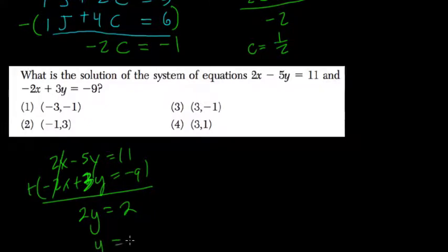Divide both sides by 2. And Y equals 1. So out of these choices, you would normally plug Y back in to one of the equations to solve for X. But the only one where Y equals 1 is choice 4. So that must be the answer.